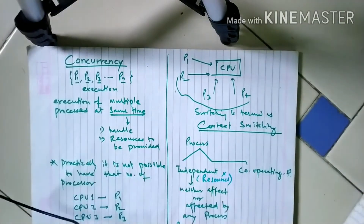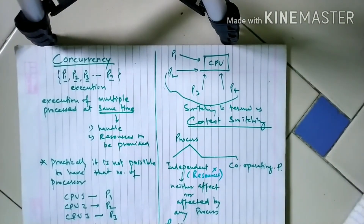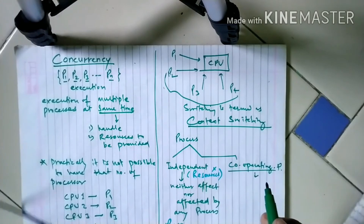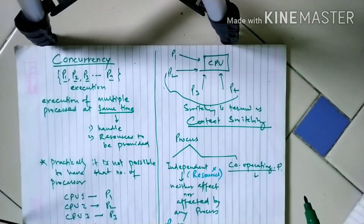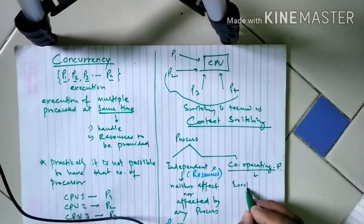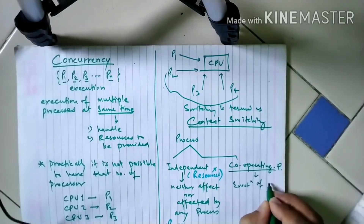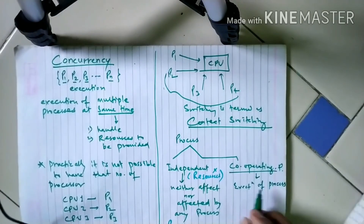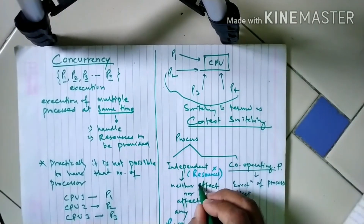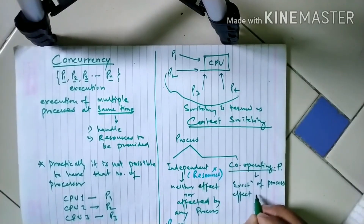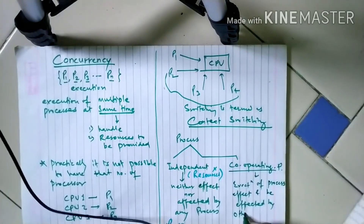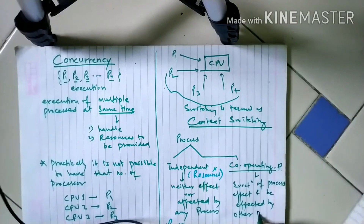As for cooperating processes, a cooperating process is one which can affect or be affected by any other process. So the execution of cooperating processes can effect and be affected by other processes in the system.